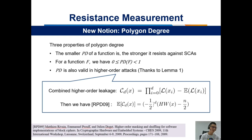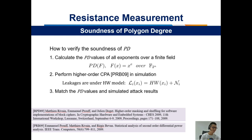There are three properties of Polygon Degree. First, the smaller the Polygon Degree of a function, the stronger it resists against side-channel attacks. Second, for a function F, its Polygon Degree is bounded between 0 and 1. Third, the Polygon Degree is also valid in higher-order attacks, because the expectation of combined leakage follows a linear transformation of the high-order moment weight distribution. We now introduce how to verify the soundness of Polygon Degree, called PD for short.